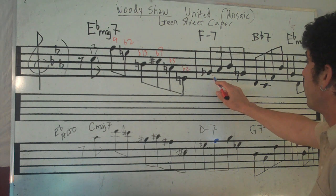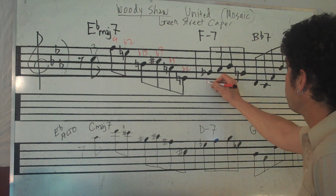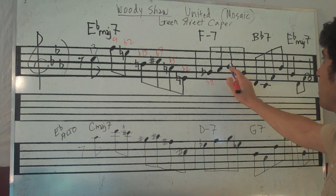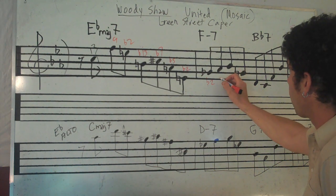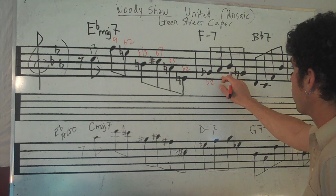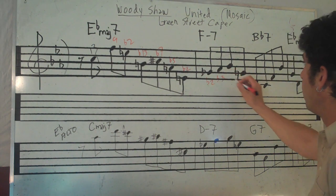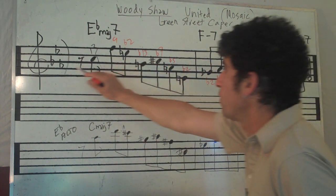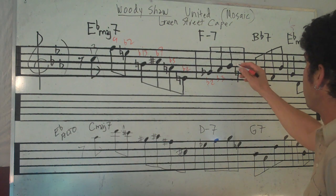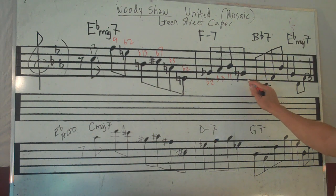So continuing on, again, he's got another flat 2 here. Flat 3. So he's starting to play within the key here. This is A flat key signature. We've got B flat, so 11, 9.